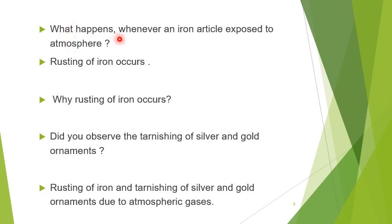What happens whenever an iron particle is exposed to the atmosphere? Generally we observe in our surroundings that iron will get rusted — rusting of iron occurs. Whenever iron particles or iron material are placed on the surface, after some days, those iron materials will get rusted.